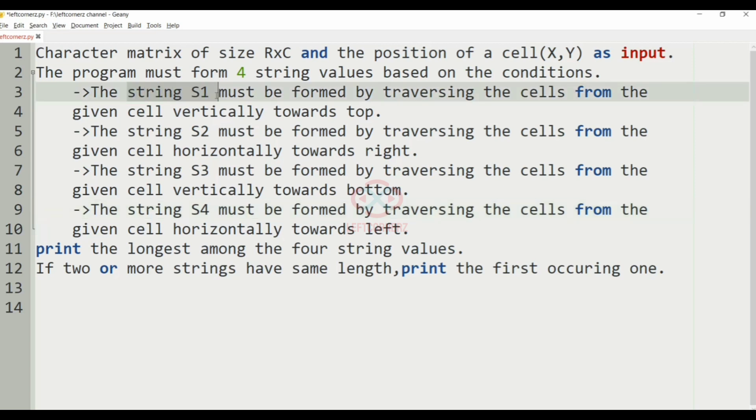The string S1 must be formed by traversing the cells from the given cell vertically towards top. The string S2 must be formed by traversing the cells from the given cell horizontally towards right. The string S3 must be formed by traversing the cells from the given cell vertically towards bottom, and the string S4 must be formed by traversing the cells from the given cell horizontally towards left.